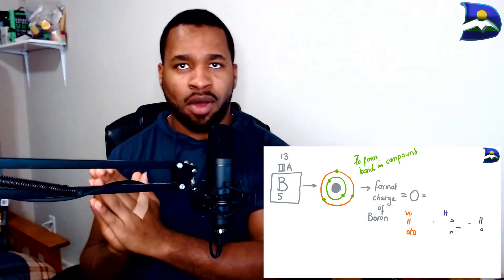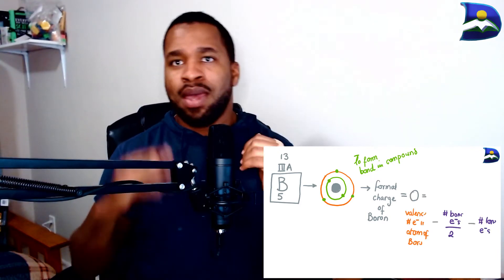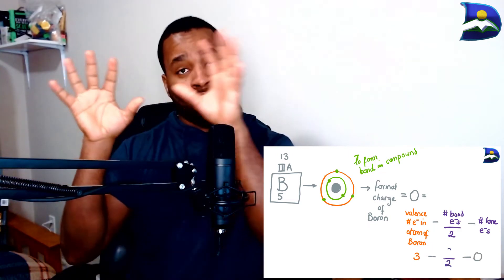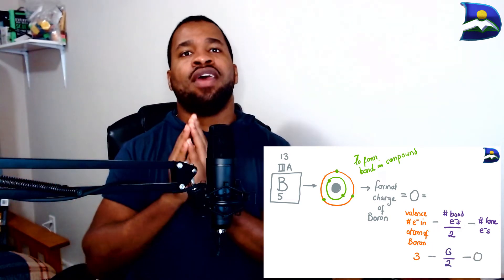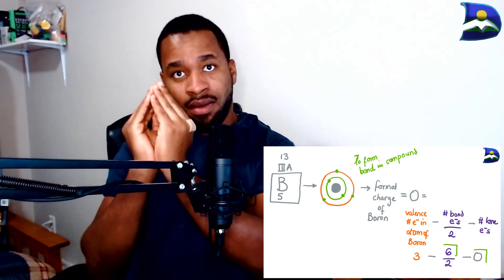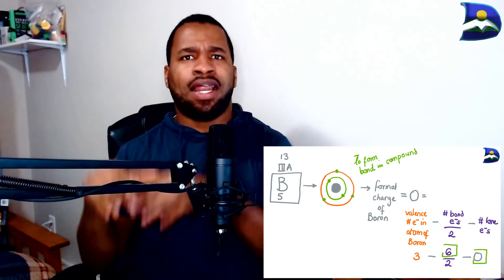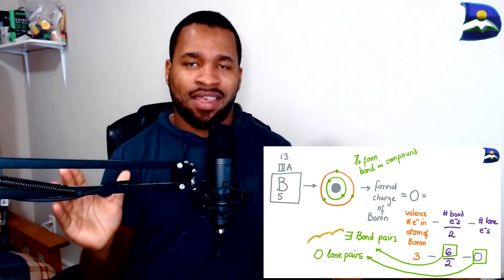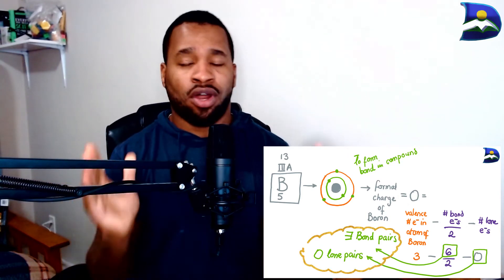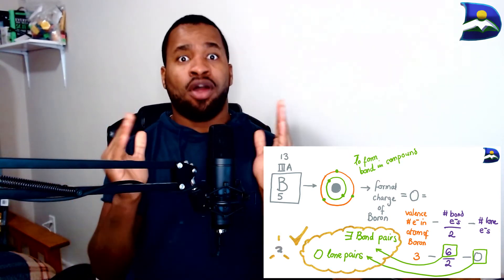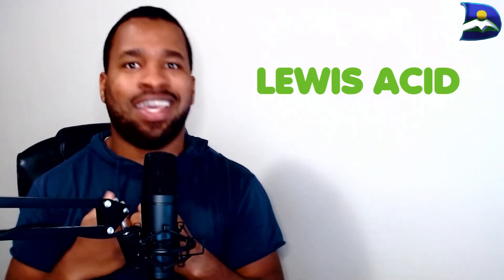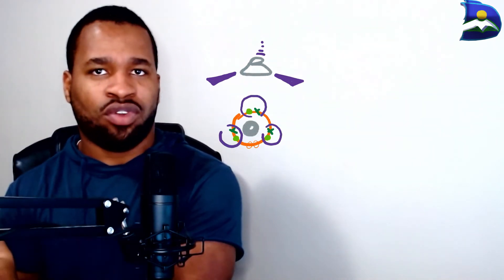In its neutral state, the formal charge of boron with just three bonds around it is calculated as: 3 − 6/2 = 0, since there are six bonding electrons and no lone pair on boron. This means boron can accept more electrons, making it a Lewis acid in its natural state before performing that type of reaction.